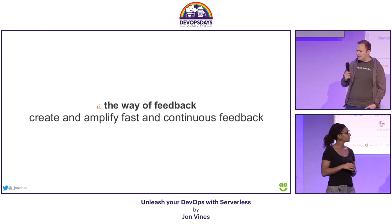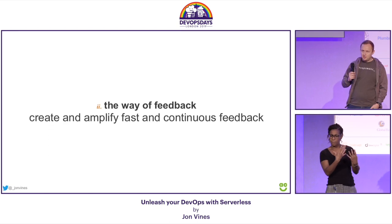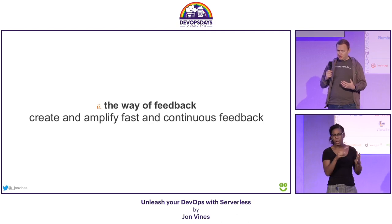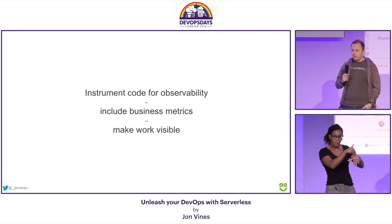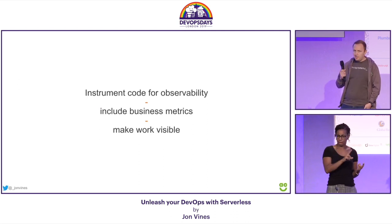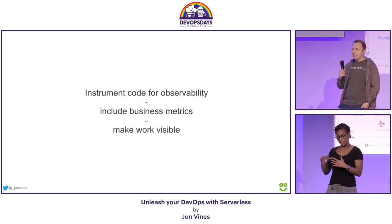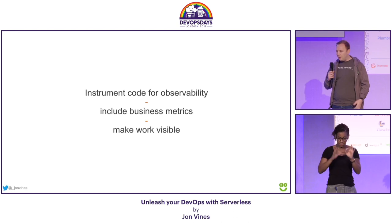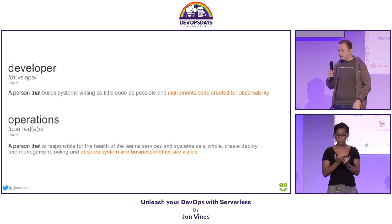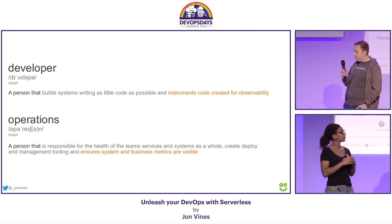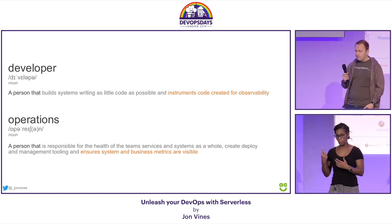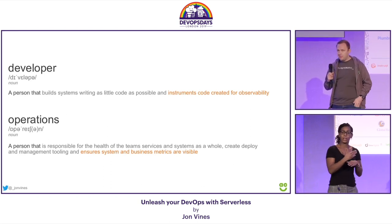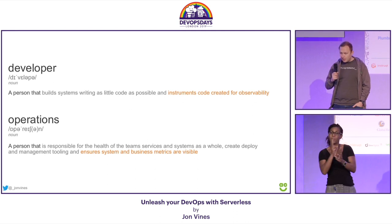The second way is the way of feedback — creating and amplifying fast and continuous feedback. This is probably one of the more challenging areas of serverless, given these highly distributed systems. Developers need to start instrumenting code for observability — this becomes an absolutely key component. We need to include business metrics so we know we're building the right thing, and we need to make all of this visible on dashboards around the business. A developer is now a person that instruments code for observability, and operations ensures system and business metrics are visible in the workspace.